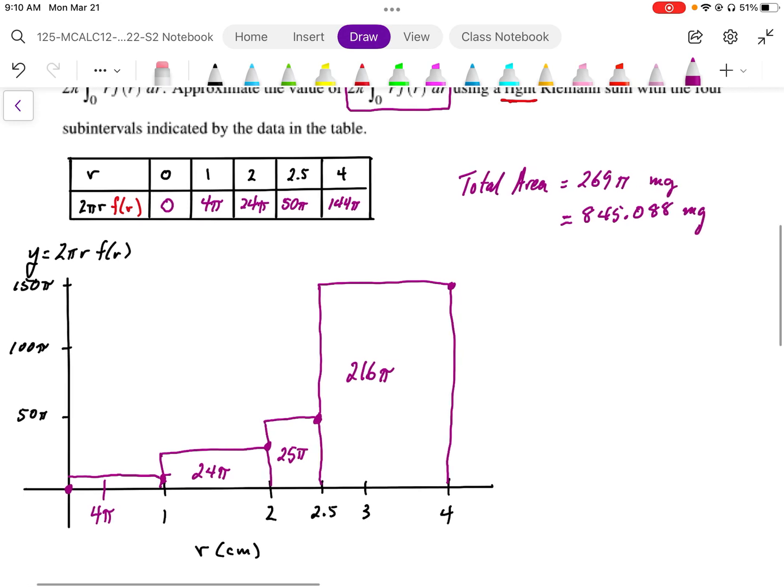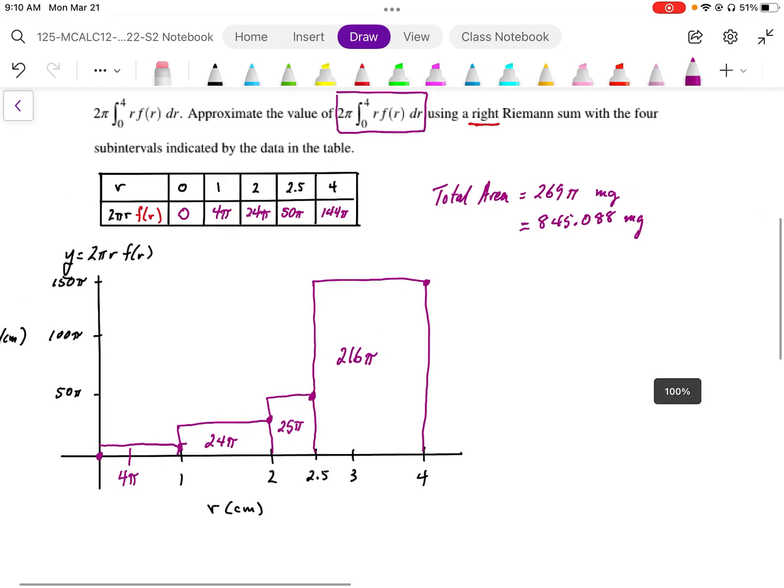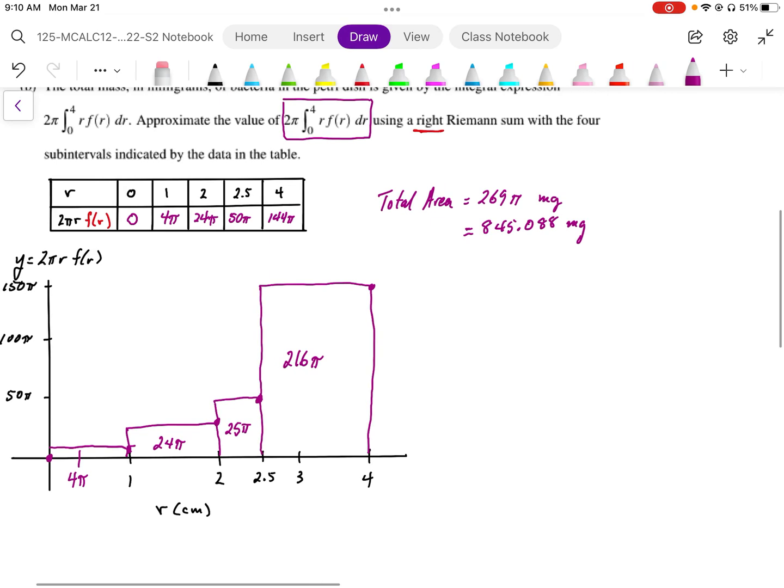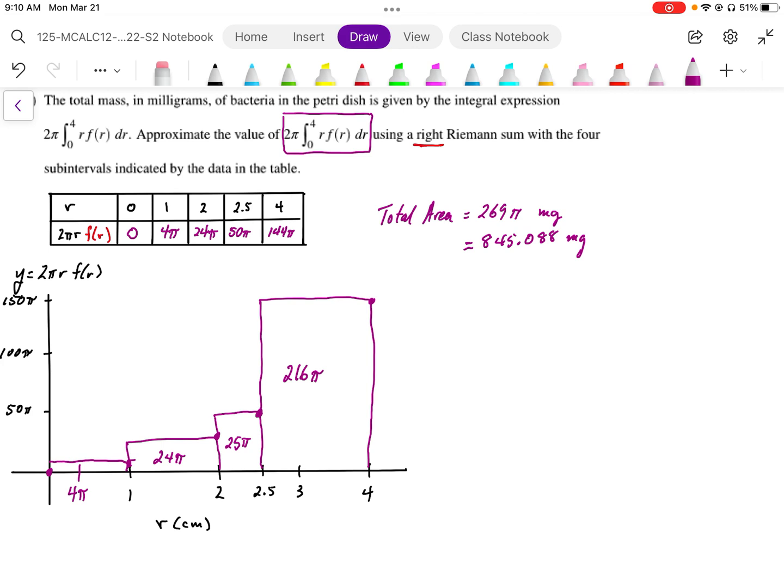That 269π translates to approximately 845.088 milligrams. That's going to be our total mass of the bacteria. We're using a right Riemann sum, and that area under the curve is going to give us that total mass.